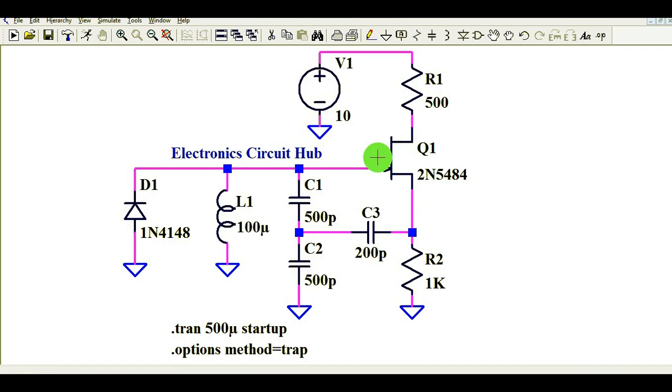So this is a very interesting video today, let's get started. You can see here, this is JFET 2N5484 and I have connected R2 and then C3. The value of C1 and C2 is 500 pF, the value of L1 is 100uH, and you can see the diode D1 is 1N4148. Here you can see the supply, DC supply voltage for this JFET is 10V.